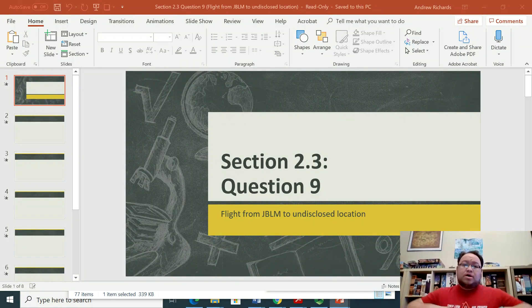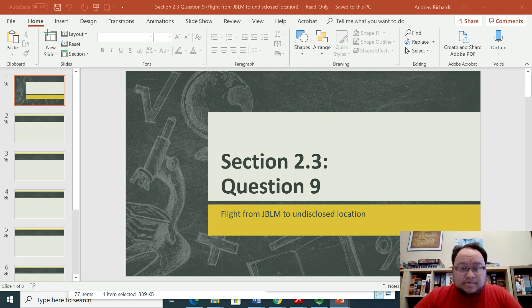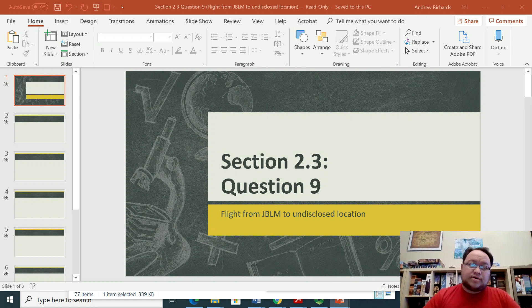Hello, this is a lecture video on section 2.3 question 9, which deals with a flight that someone's taking from JBLM or Joint Base Lewis-McChord here in Washington to an undisclosed location. Let's go ahead and overview the question first.